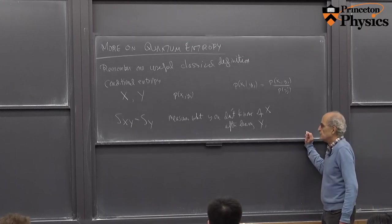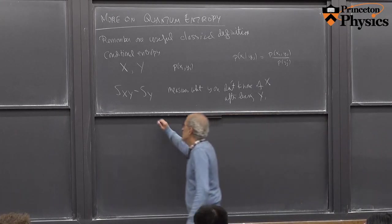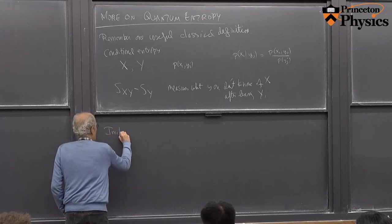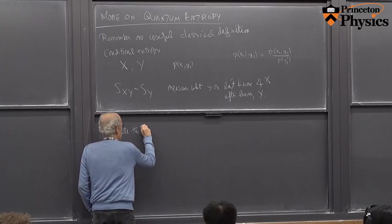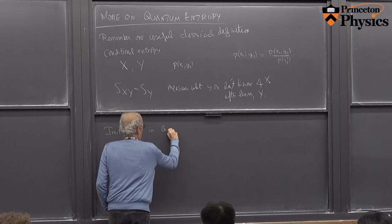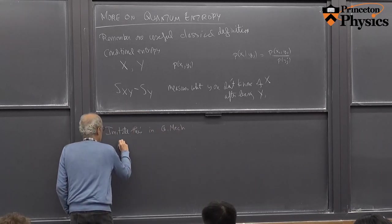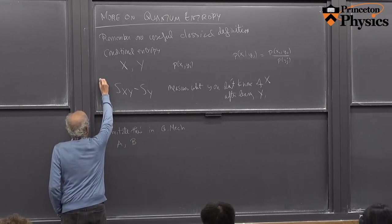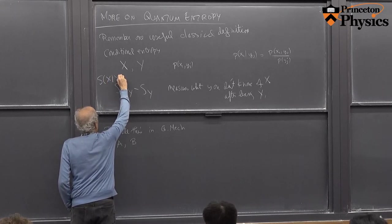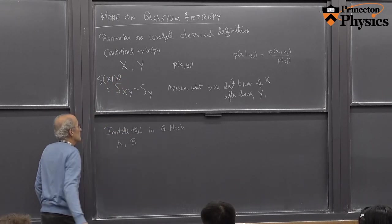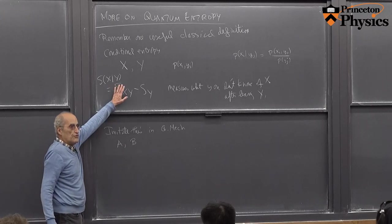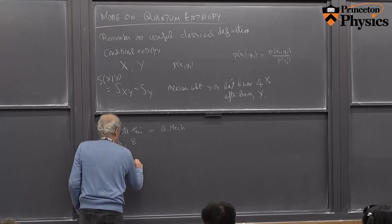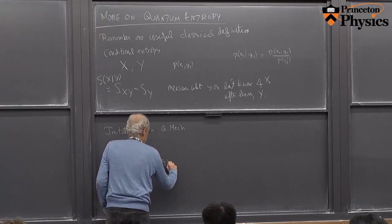We discussed that a couple of weeks ago, so we won't repeat it today. Now, one imitates this definition quantum mechanically. So now we have two quantum systems A and B. This is usually denoted as conditional entropy of X given Y, where the single bar means conditional on the second variable. Similarly, one defines quantum mechanically this difference as a conditional entropy.